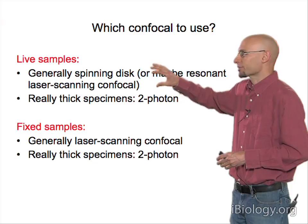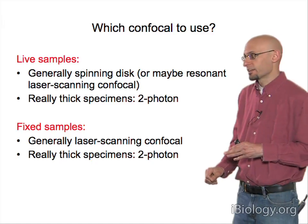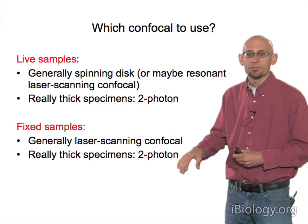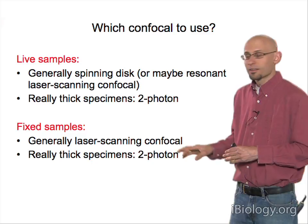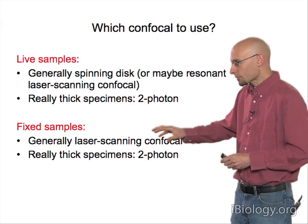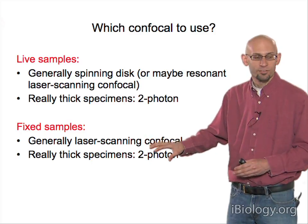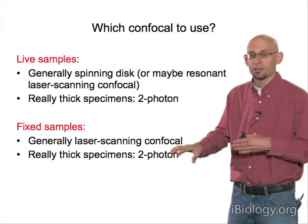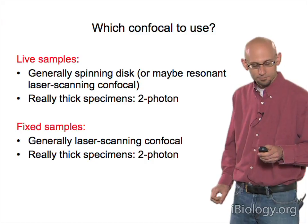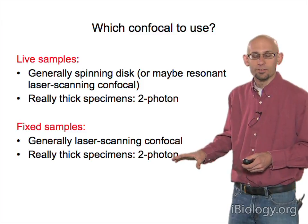Which confocal do you want to use? For live samples, generally use spinning disk, or consider resonant laser scanning confocal. For really thick samples like tissue explants or imaging into a live mouse, two-photon really shines. For fixed samples, generally start with a laser scanning confocal — sensitivity is less of a concern since photobleaching and phototoxicity are non-issues. For very thick fixed specimens, you would also consider two-photon. If you have access to both types, try both to see which works best.